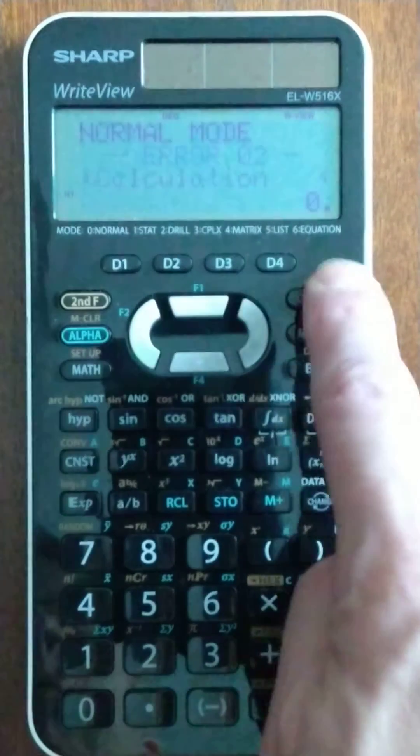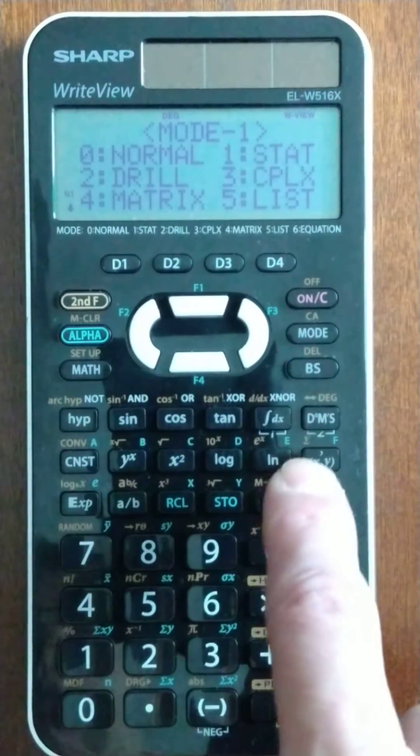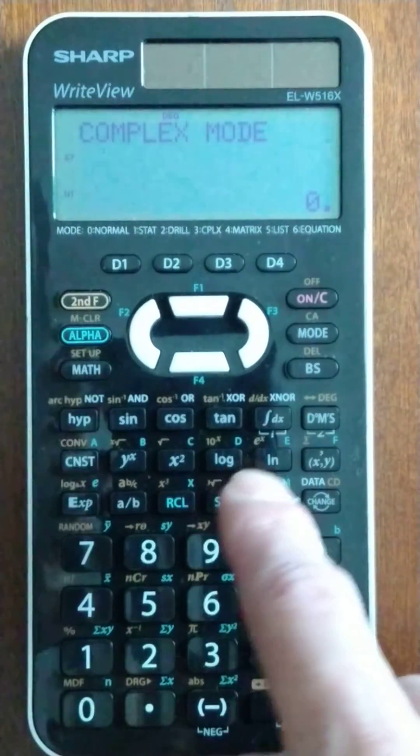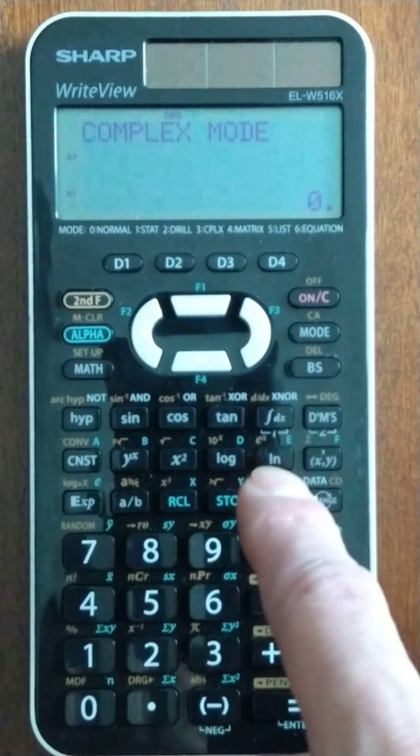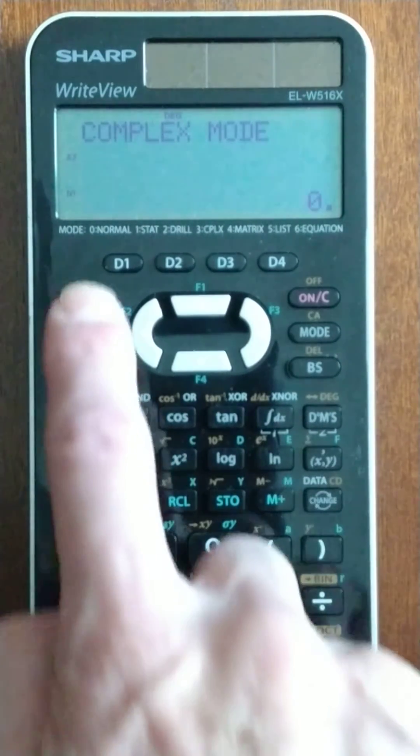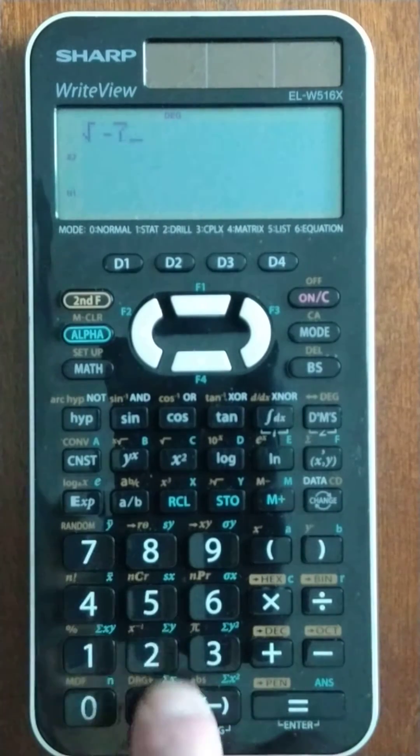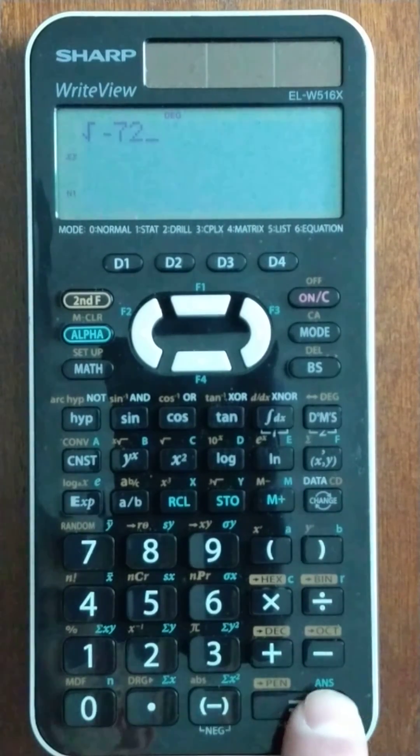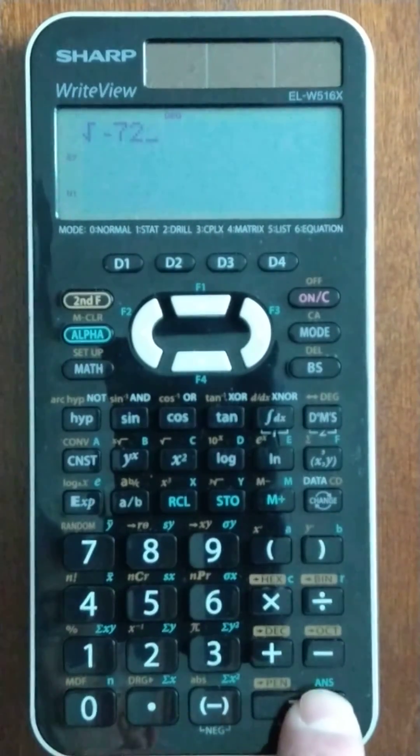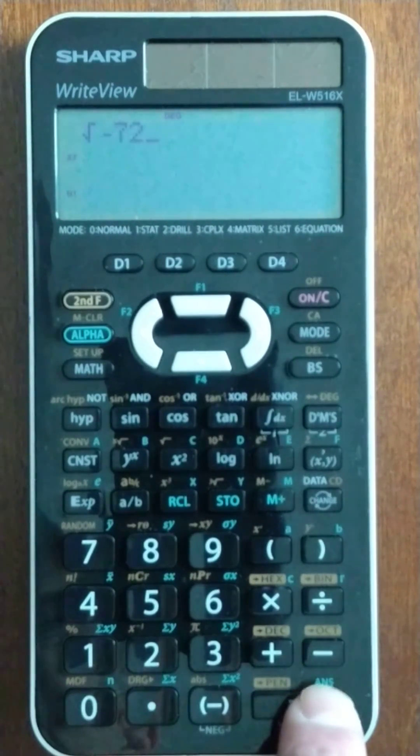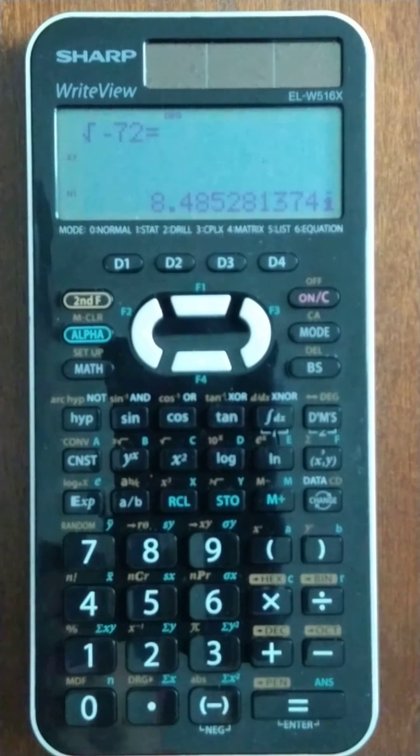But when we go into our complex mode, 3, we can, let's see if I can get the focus to be a little better here. You still have to shift to get the square root. Square root of negative 72. Notice it's not quite as pretty. It's not obvious that that little square root symbol goes across, but it does. Gives us our answer.